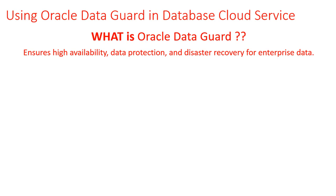The Oracle Cloud Infrastructure Database Data Guard implementation requires two databases, one in a primary role and one in a standby role. The two databases compose a Data Guard association, which keeps the data in both databases in sync. Most of your applications will connect to the primary database, which is open for read and write, and there will be a replication of data to the standby database.